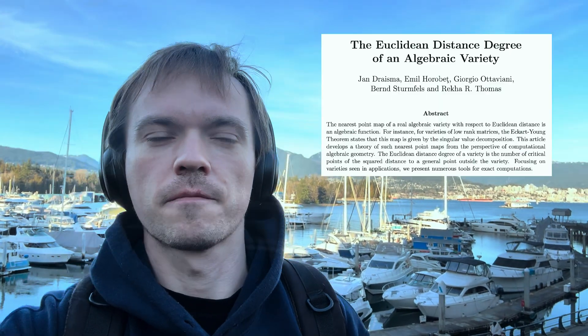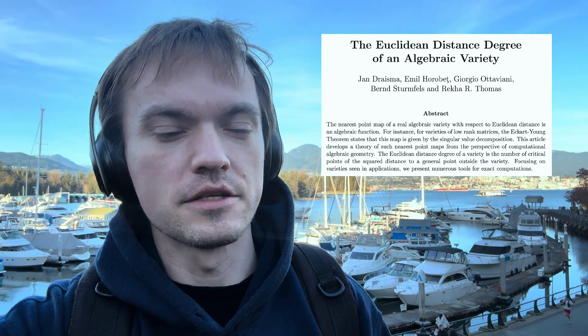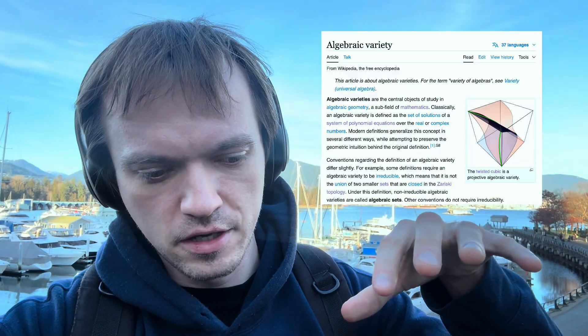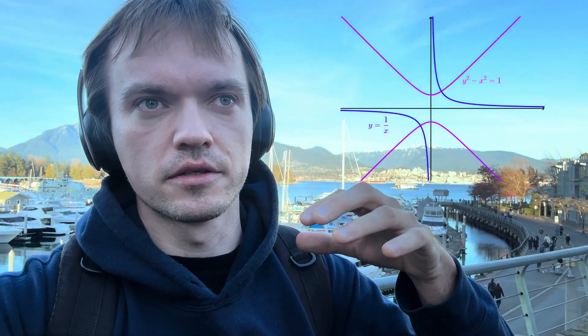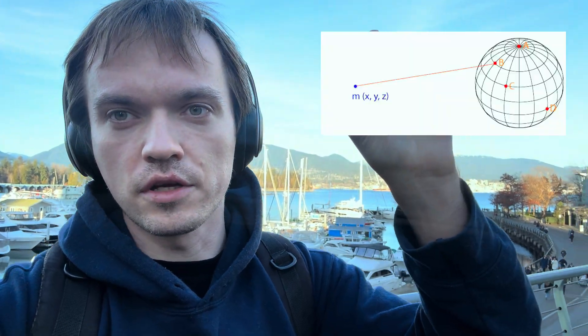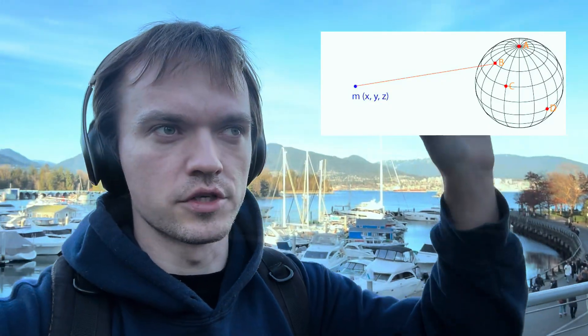This week I learned about Euclidean distance degree. The idea is that you have an algebraic variety — in other words, some shape that lives in n-dimensional Euclidean space. This shape is described as the solution set of some polynomials; let's take n polynomials. Inside this Euclidean space you can have a point which either lies on the shape or lies outside of the shape.